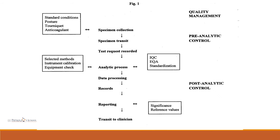This flowchart shows the complete events happening in the laboratory, starting from specimen collection to the transit of the report to the clinician. The first three stages — specimen collection, specimen transit, and test recording — are involved in pre-analytical control. Factors such as standard conditions of specimen collection, posture, tonic weight, and anticoagulant affect pre-analytical control. Then comes the analytic process where the selected methods, instrument calibration, and equipment check are the key factors.